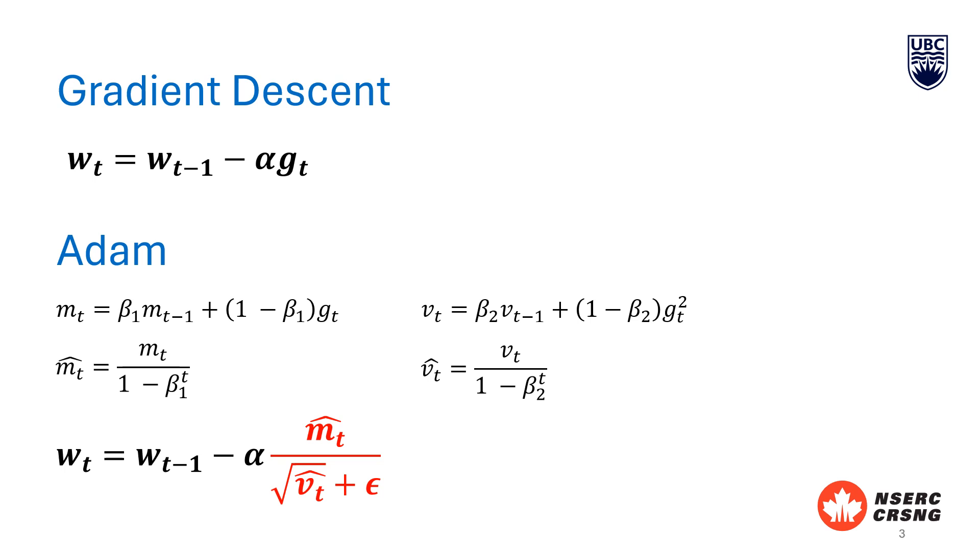M-hat is the bias-corrected first moment estimate. It's important because m can be biased towards zero at the start, which can cause unstable updates. By correcting this bias, m-hat helps prevent high oscillations and provides a smoother optimization path.